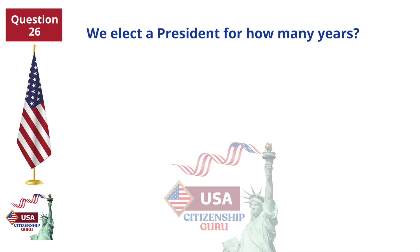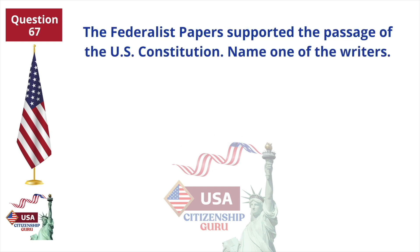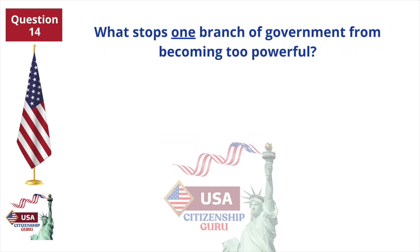We elect a President for how many years? The Federalist Papers supported the passage of the U.S. Constitution — name one of the writers. What stops one branch of government from becoming too powerful?